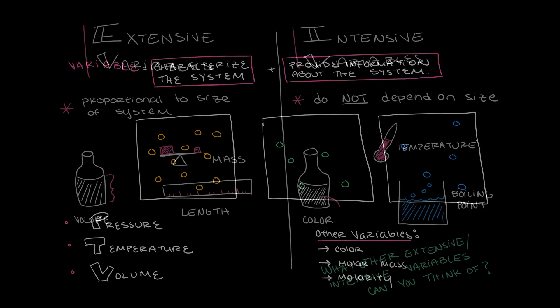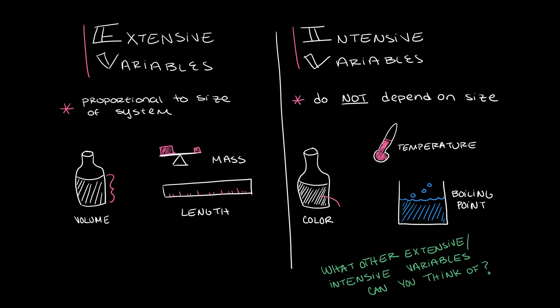There are two types of variables: extensive variables and intensive variables. Extensive variables are proportional to the size of the system, while intensive variables don't depend on size.